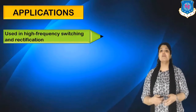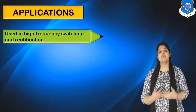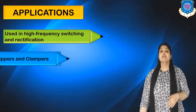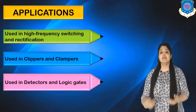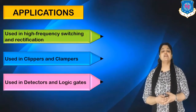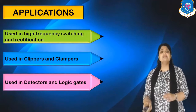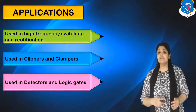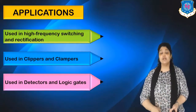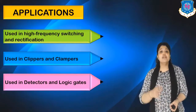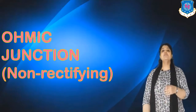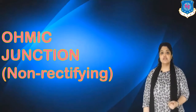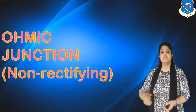Applications of the Schottky diode include high frequency switching and rectification, clippers and clampers, and detectors and digital logic gates. The applications are similar to a PN junction diode, but the Schottky diode offers a low voltage drop and a very fast switching action.